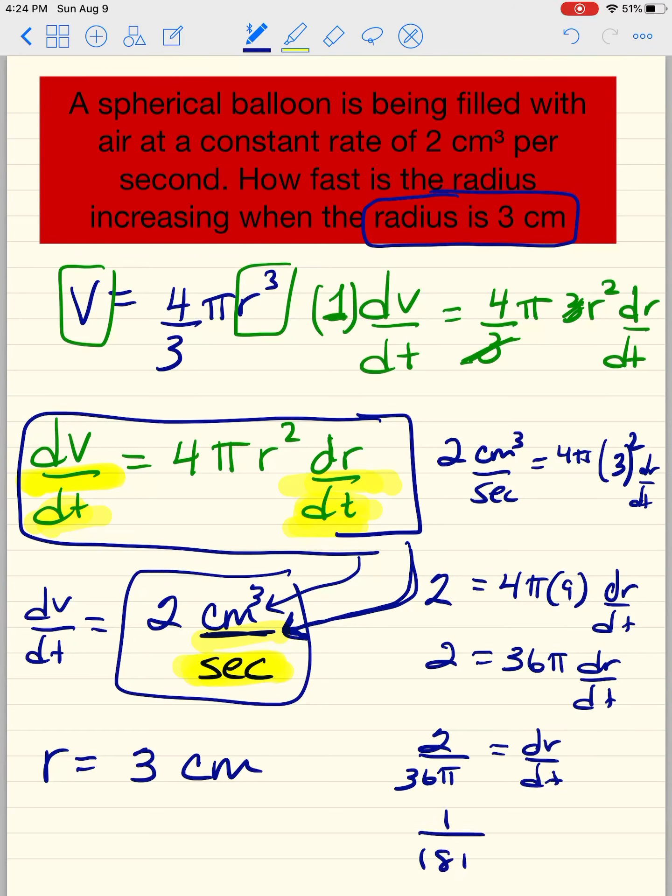And we need a unit for this. So since this is centimeters, and we're going to square it, it's centimeters squared. If this is centimeters to the third power, so when you divide, you'll be left with centimeters and then per second.